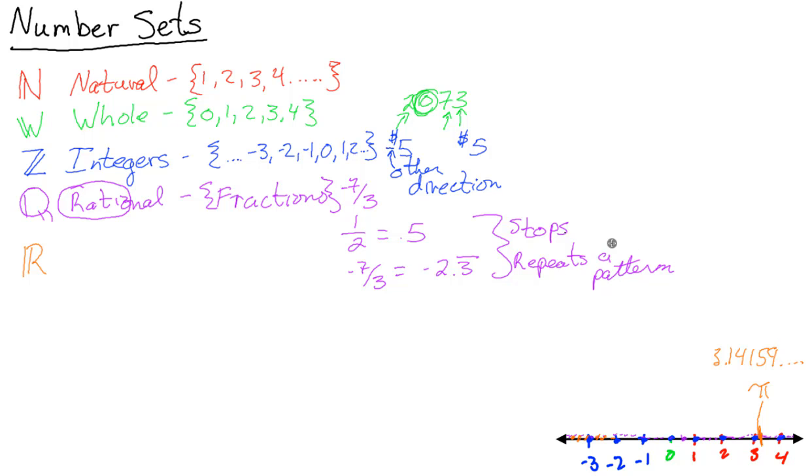If any of you are aware of that, that keeps going. 3.14159 dot dot dot—there's no repeating of a pattern and it doesn't stop. There are others, a very famous one: where you have a right triangle and you have 1 squared plus 1 squared, and how big is this guy? Well, 1 squared plus 1 squared with the Pythagorean theorem equals x squared. X equals the square root of 2, which turns out to be about 1.41 something something something.